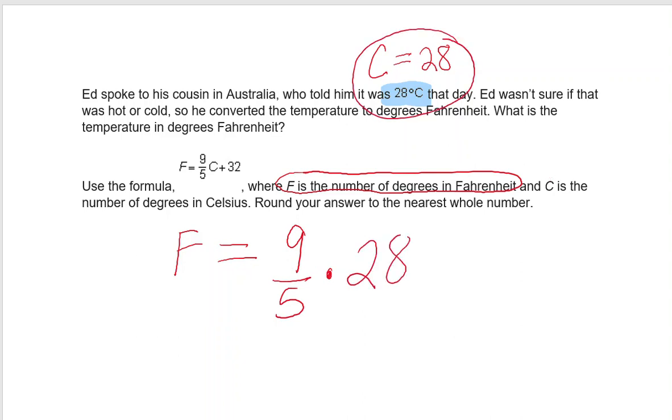The formula is F equals 9/5 times C plus 32. This is how we would set up the problem, and we need to use order of operations. We have multiplication and addition. We do parentheses first, then exponents, then multiplication and division from left to right, and finally addition and subtraction from left to right. So the first thing we're going to do is multiply 9/5 times 28.